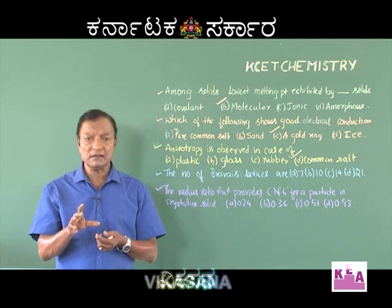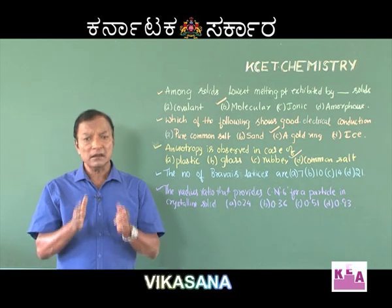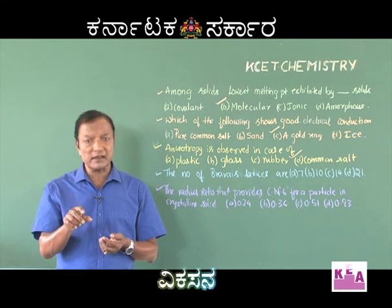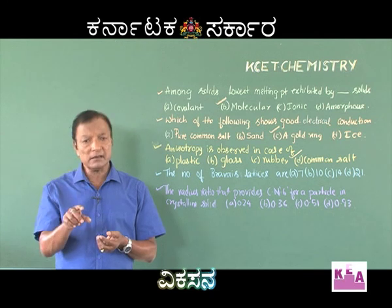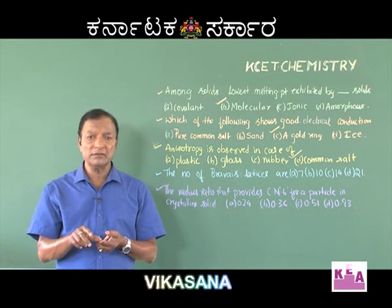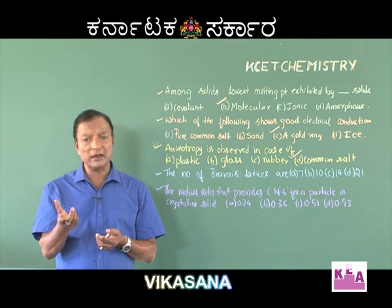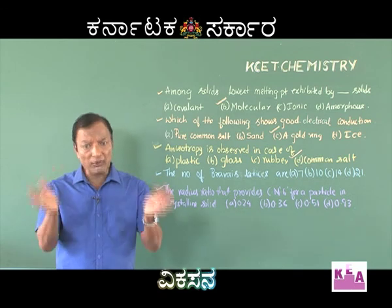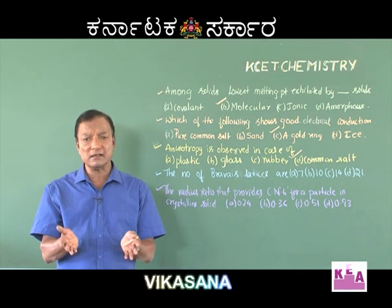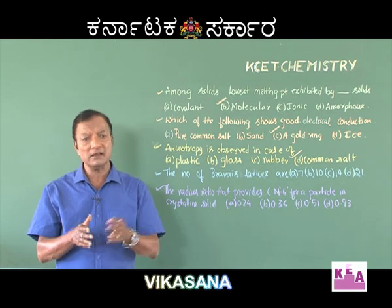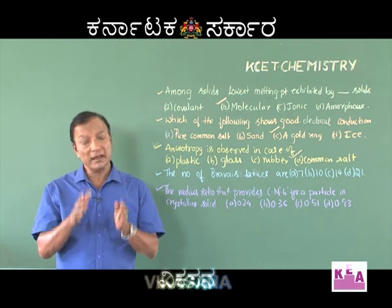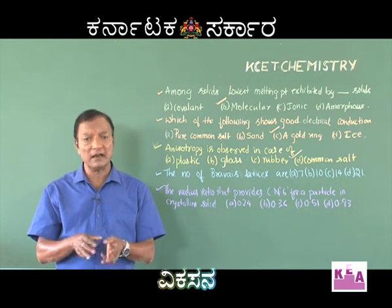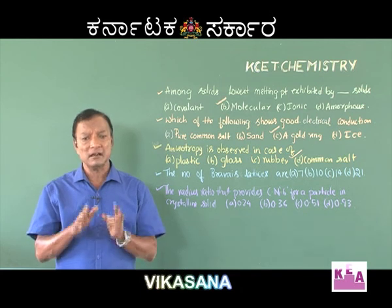Seven unit cells provide us seven lattices. Any crystalline substance we get, whether it is a laboratory-prepared sample or naturally occurring material, its lattice should match with one of these seven lattices built up from the seven unit cells. Therefore, they are taken as the standard lattices and are called the seven crystal systems.